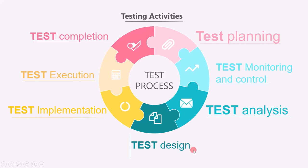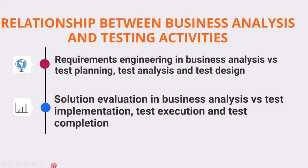From the ISTQB Foundation Level perspective, the test process consists of the following main groups of activities: test planning, test monitoring and control, test analysis, test design, test implementation, test execution, and test completion. There are many associated activities and tasks related to both business analysis and testing, which we will examine next. We will use two examples to establish the relationship between the two roles.